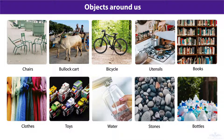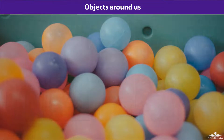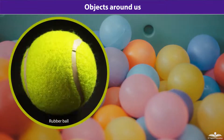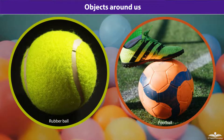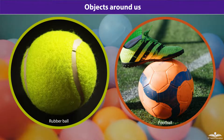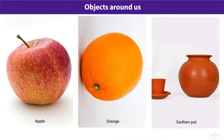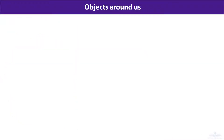Look around and identify objects that are round in shape and make a list. That list may include a rubber ball, a football. If we include objects that are nearly round in shape, our list could also include apples, oranges, an earthen pitcher, and many more such objects.